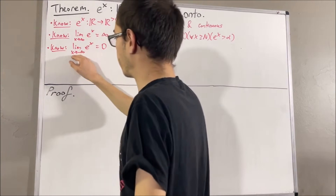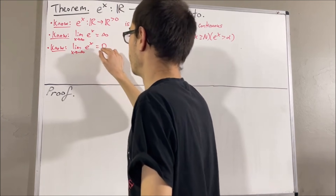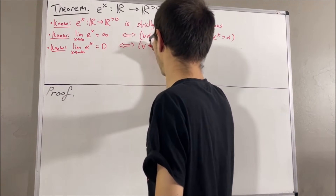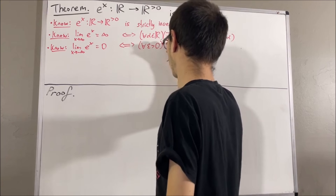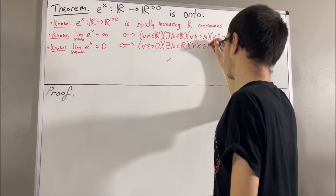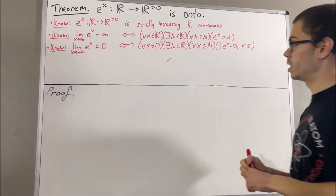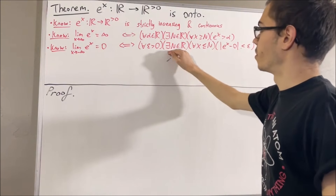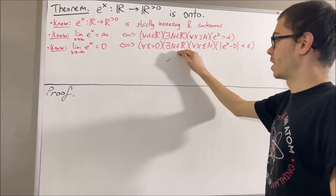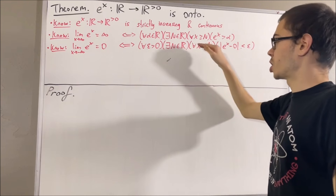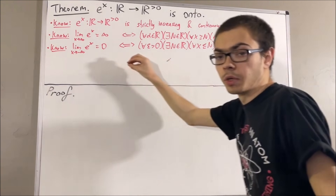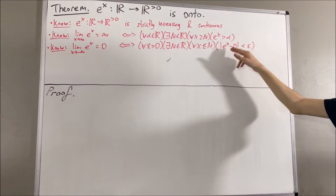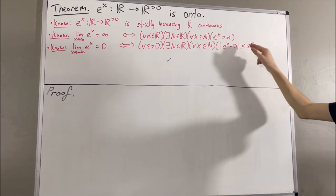To say the limit as x approaches negative infinity of e^x equals 0 means the following: for every ε > 0, there exists a capital N in the real numbers, such that for all real numbers x ≤ N, the absolute value of e^x − 0 is less than ε.